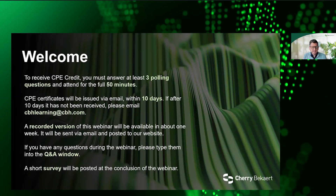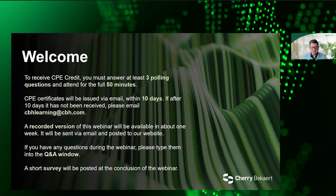We will send CPE credit out in an email. If you do not receive it, just reach out to cbhlearning@cbh.com. We will post a recorded version back on the same website you used to register, which usually takes about a week. If you have any questions, please use the Q&A pod in Zoom. You can also use the chat window, and there will be a short survey at the end that we'd love for you to fill out.